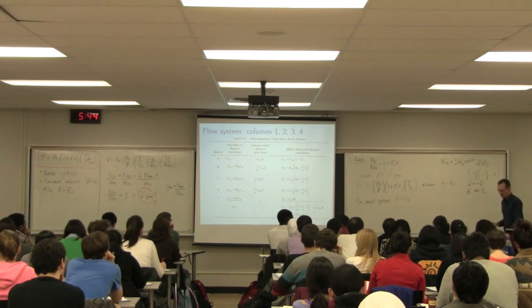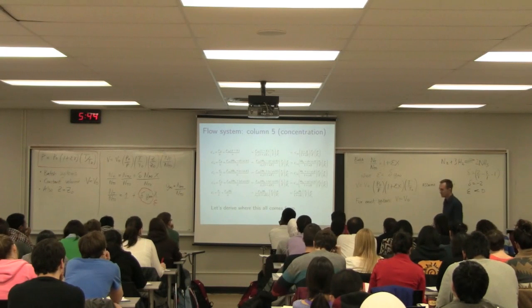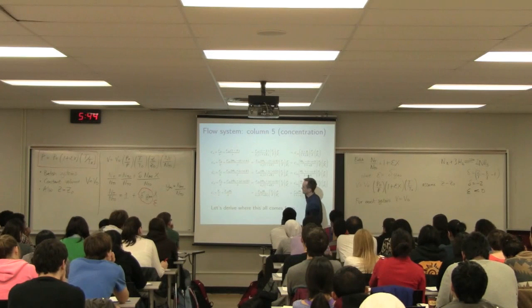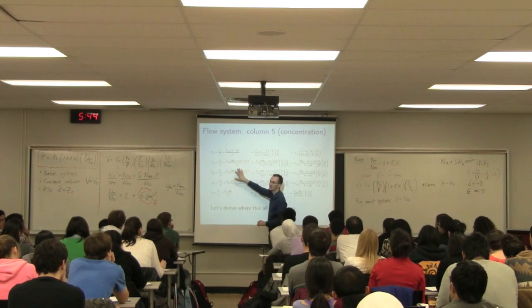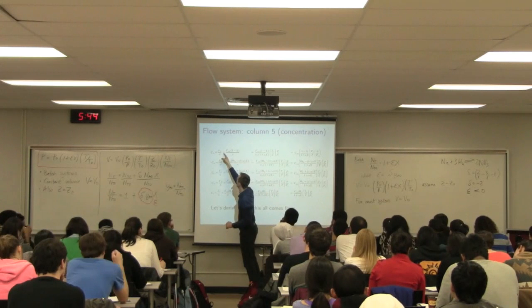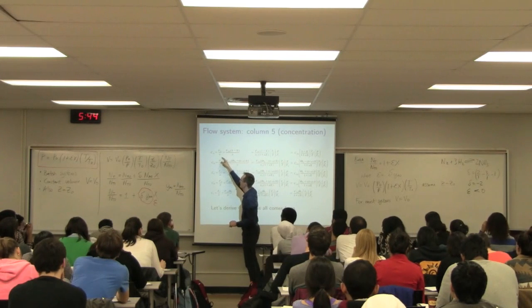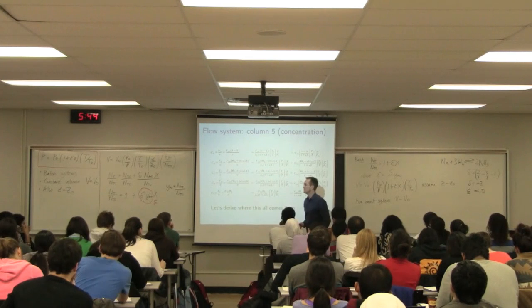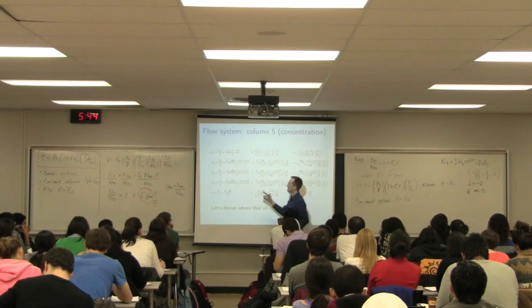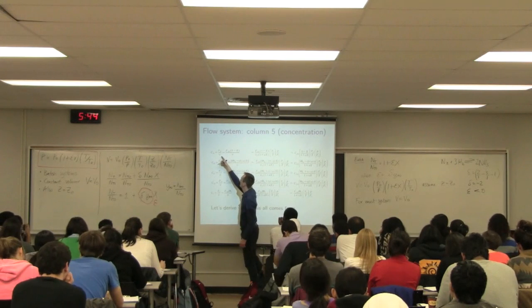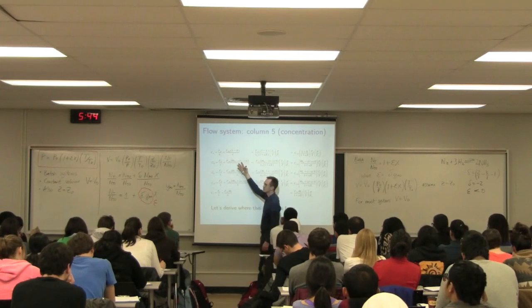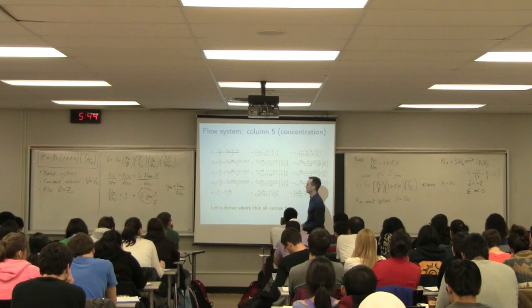The problem comes when we want to work with concentrations and conversions. In the last class, we added a fifth column for concentration. The concentration equals the molar flow divided by the inlet volumetric flow rate — Fₐ divided by v (or Q, as it is sometimes called). We derived concentration expressions for A, B, C, D, and the inerts.